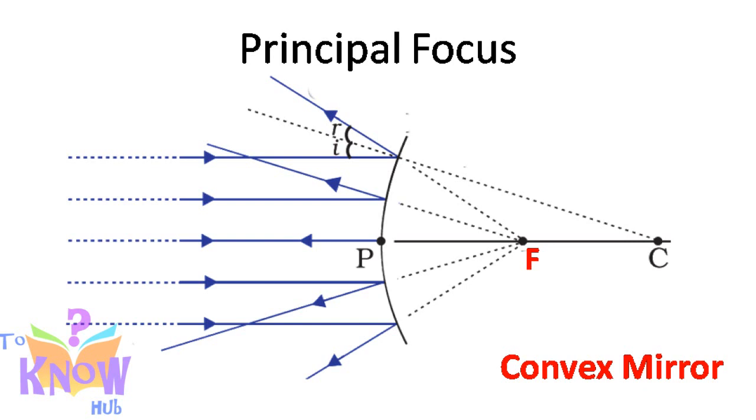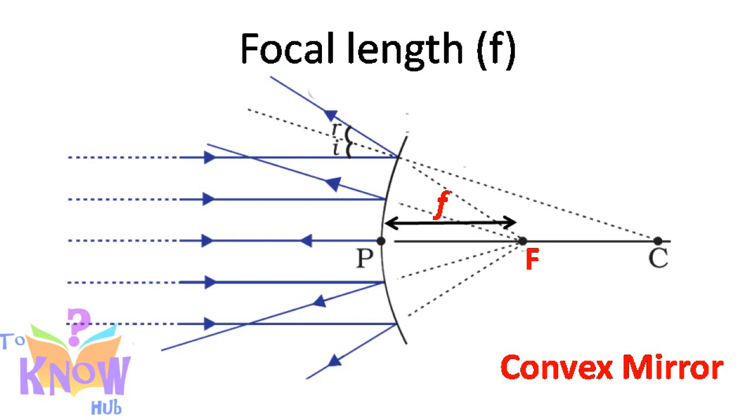The distance between pole and the principal focus is called focal length, denoted by small f. This is the most important element. As you can see here, r is equal to 2f, means radius of curvature is twice of focal length.